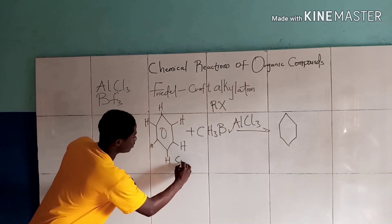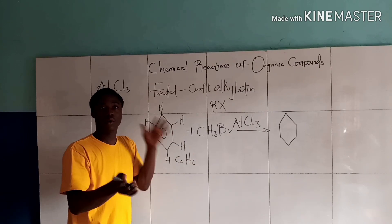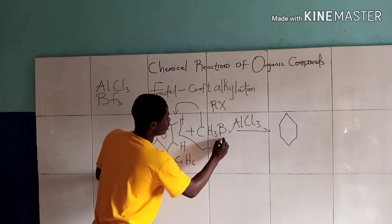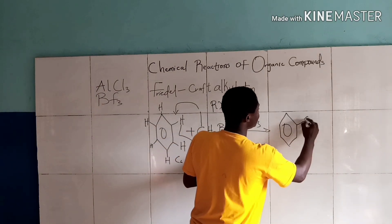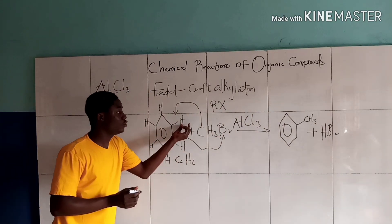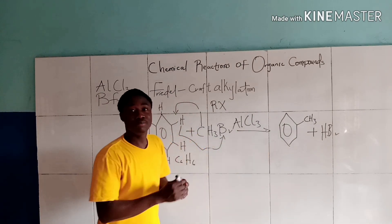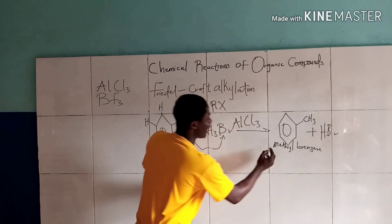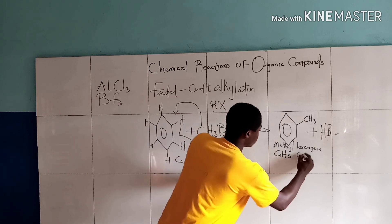Now this is benzene, which is C₆H₆. The methyl group and a hydrogen are going to substitute each other. So the methyl group combines with benzene while the hydrogen mixes with the Br from CH₃Br. What we get is a benzene structure with CH₃ attached, plus HBr as a byproduct, because this hydrogen goes to bromine to form HBr. This major product is called methylbenzene, with the chemical formula C₆H₅CH₃.